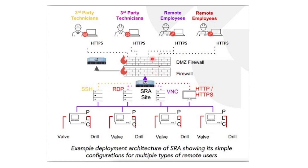All requests from a third-party technician or remote employee come to a DMZ firewall over VPN through SSL. Once the request is verified by the access server based on the configured policy, the communication is extended to the SRA site. Once the user has access to the SRA site, they can initiate SSH protocol to a PLC, RDP to an HMI, or VNC or HTTPS-type communication.